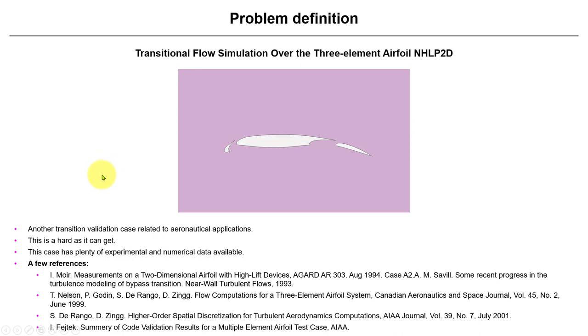In this case, we have another classical case targeted for the aerospace aeronautical community. We have the three element airfoil, and this is as difficult as it can get because we're modeling transition to turbulence and also capturing the stall maximum lift and angle of attack, the maximum CL coefficient, which is difficult to capture in airfoil.